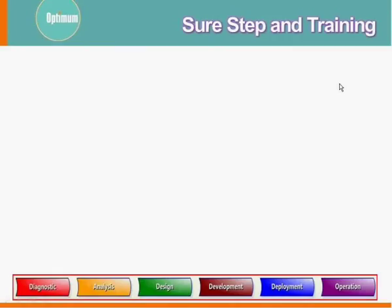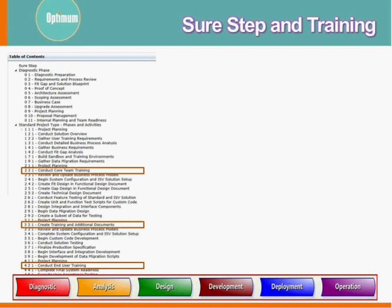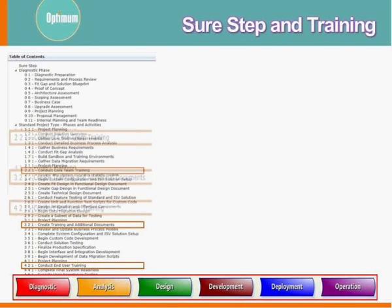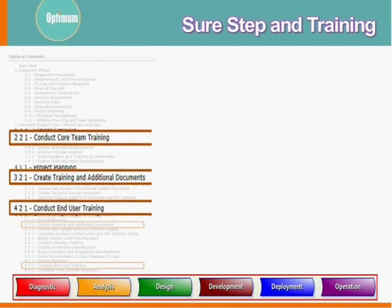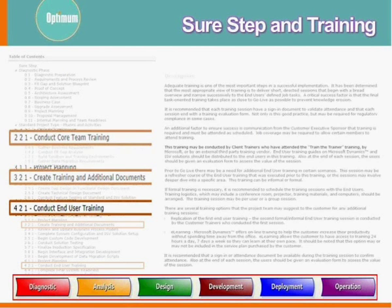Microsoft decided to help its partners by developing a core common set of processes to help roll out Dynamics AX, called SureStep. I'm sure many of you have heard of that. Let's look at what effect SureStep can have. Within the standard SureStep implementation process, there are three mentions of training: conducting core team training, creating documentation, and end user training.